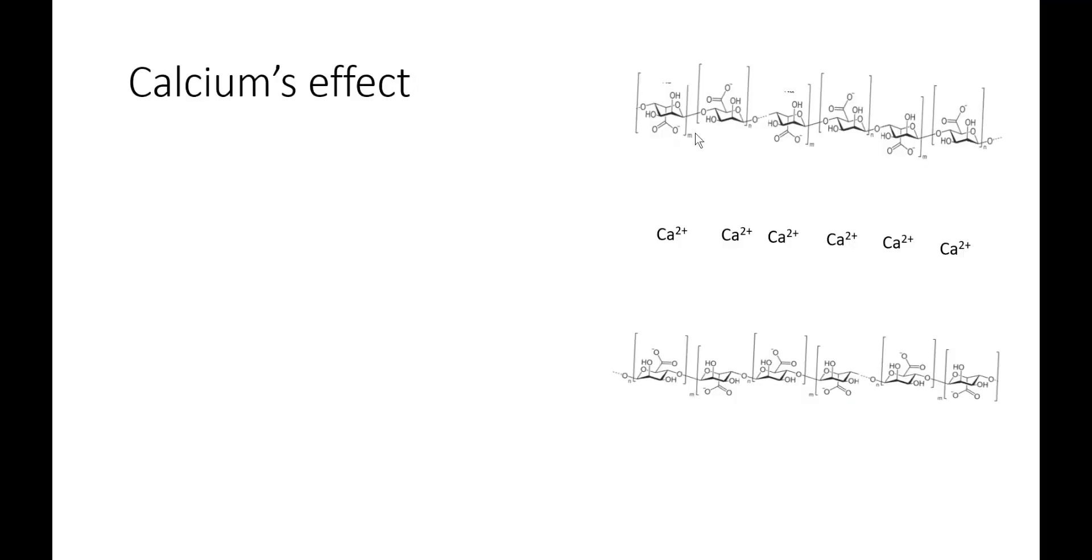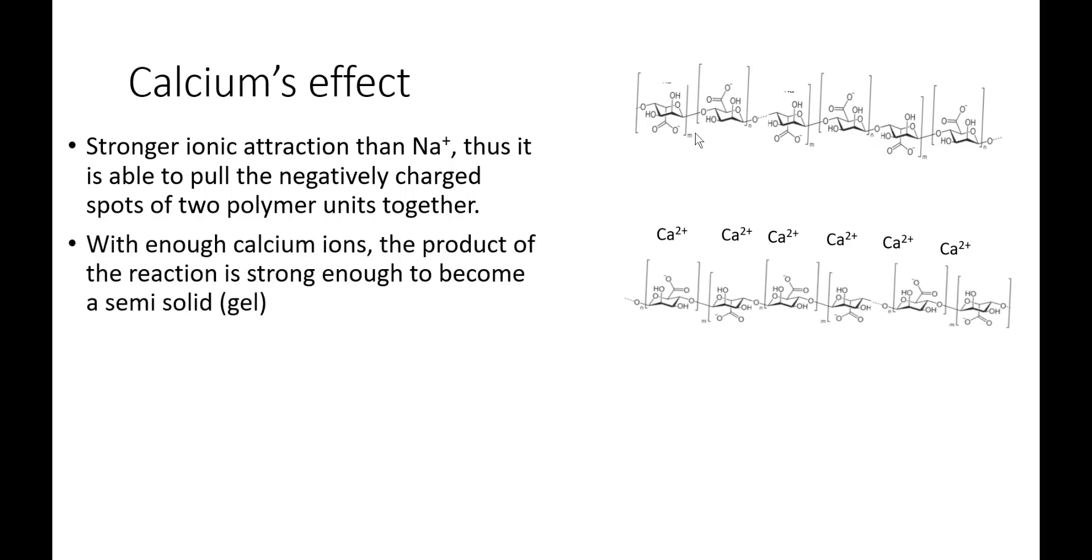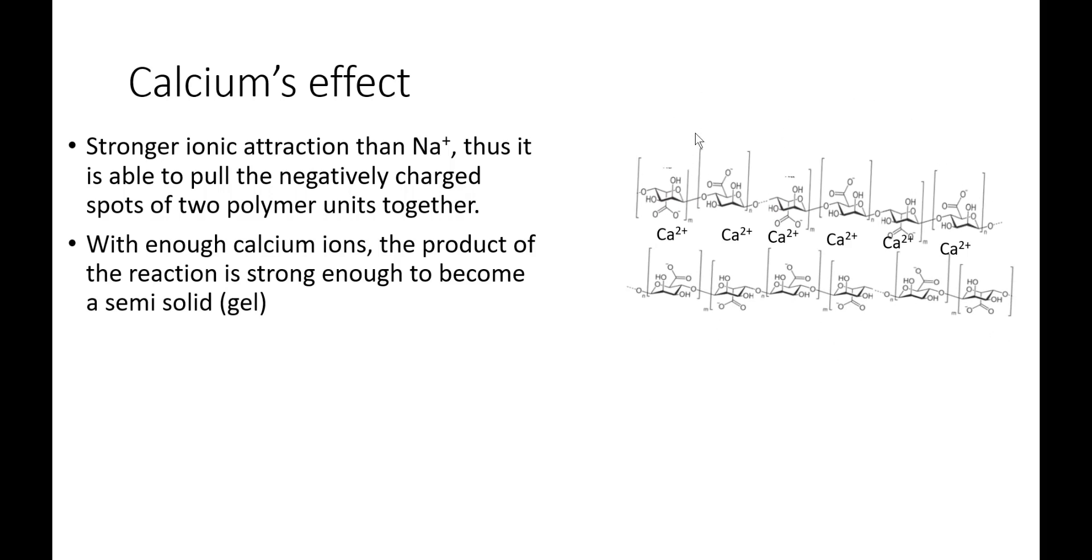Nothing really special occurs unless we start to add some calcium into the mix. Calcium can have an interesting effect on these anionic alginate chains. Because they're about twice as strong as the sodium plus one, the calcium plus two is able to pull the negatively charged spots of two polymers together. With enough calcium ions in solution, the product actually becomes relatively strong, or at least a semi-solid, often referred to as a gel.